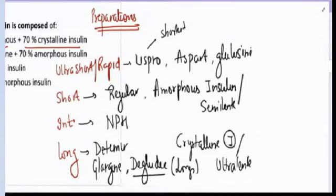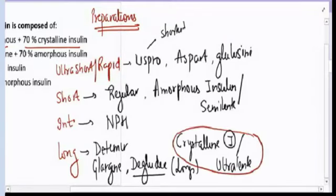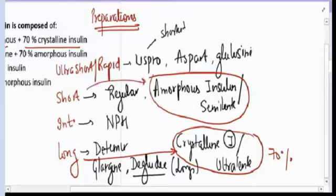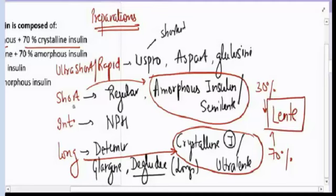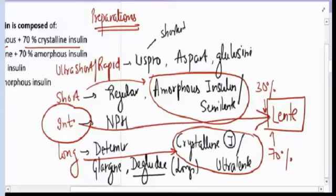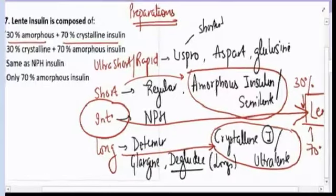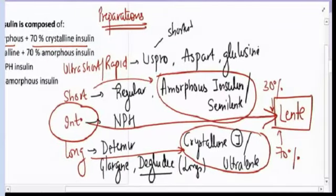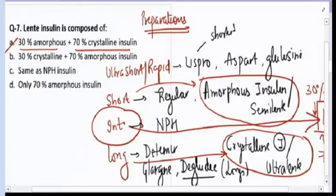Lente insulin is a mixture of 70% long-acting crystalline insulin (ultralente) and 30% short-acting amorphous insulin (semilente). This combination makes lente insulin itself an intermediate-acting insulin. So the correct answer for question number seven is A: 30% amorphous, 70% crystalline.